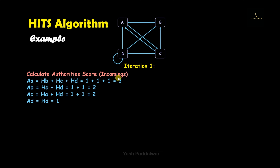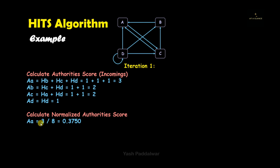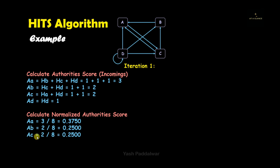Now we normalize these authority scores. To normalize, we divide every single authority score by the sum of all authority scores. The sum is 3+2+2+1 = 8. So the normalized authority scores are: node A = 3/8 = 0.3750, node B = 2/8 = 0.2500, node C = 2/8 = 0.2500, node D = 1/8 = 0.1250.